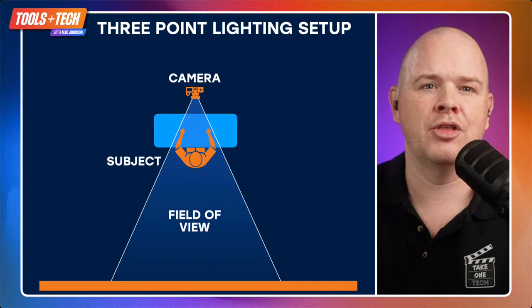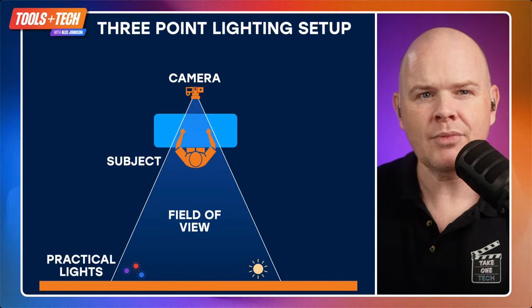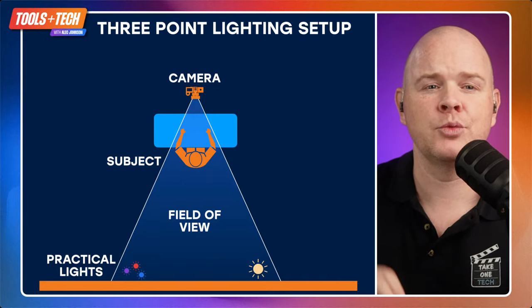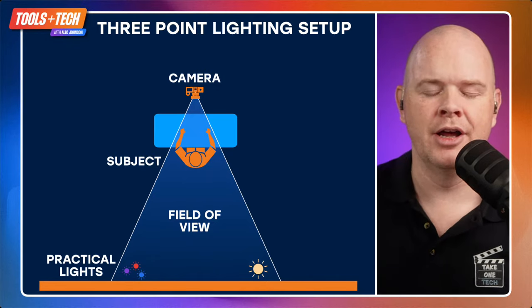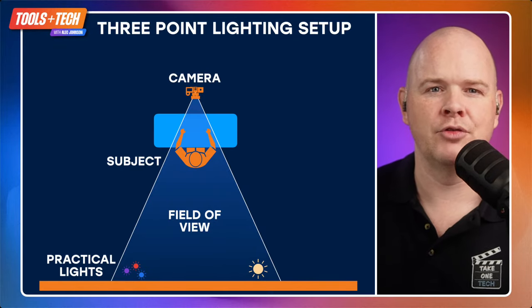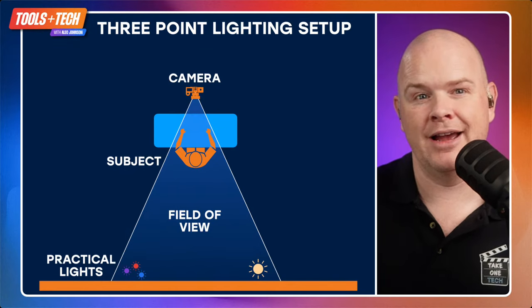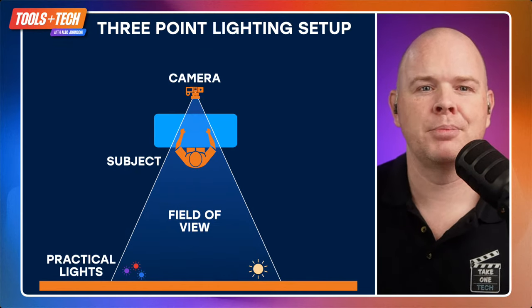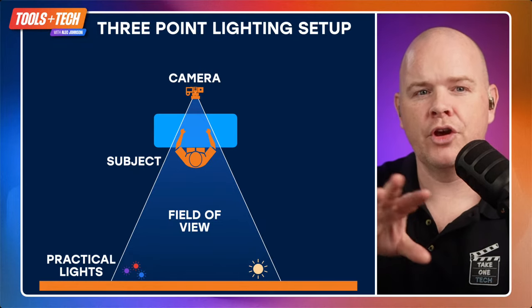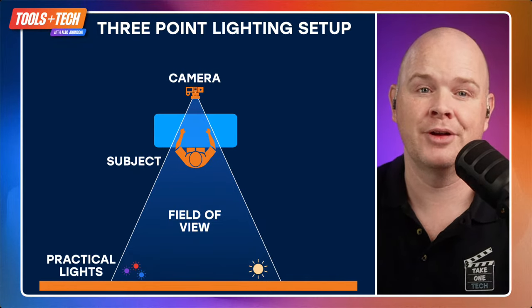Before getting to the three lighting positions, I want to mention practical lights — things you might have in the background for decoration. I've got some lights behind my acoustic panels, and the back wall has illumination on it too, plus my Rodecaster Pro 2. These practical lights are things that are just featuring in the scene as little accent lights, and that's going to come into play a little bit later.